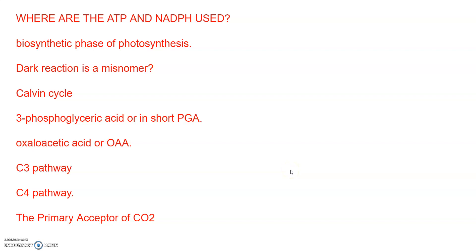Good morning. Till now we learnt that the products of light reaction are ATP, NADPH, and oxygen. Of these, oxygen diffuses out of the chloroplast, whereas ATP and NADPH are used to drive the process leading to the synthesis of food — more accurately, sugars. This is the biosynthetic phase of photosynthesis. This process does not directly depend on the presence of light but is dependent on the products of the light reaction, that is ATP and NADPH, apart from carbon dioxide and water.